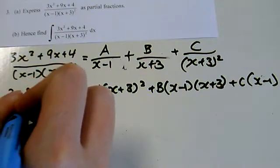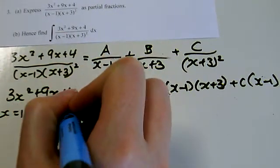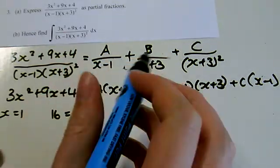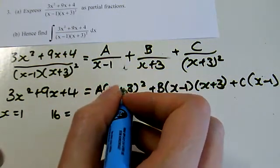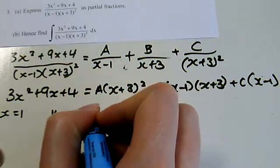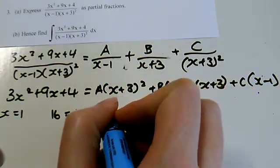So if x equals 1, I've got 3 plus 9 is 12. 16 equals, here I'd have 1 plus 3 is 4 squared, so it equals 16A. This cancels and this cancels, leaves me A as 1.